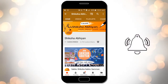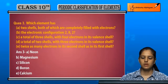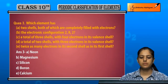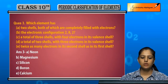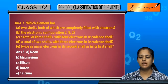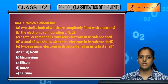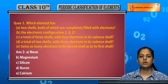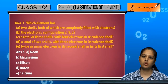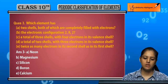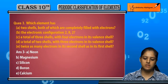Question 3: Which element has two shells, both of which are completely filled with electrons? We need to find the element that has two completely filled shells. Such an element would be a noble gas, and in this case it is Neon.